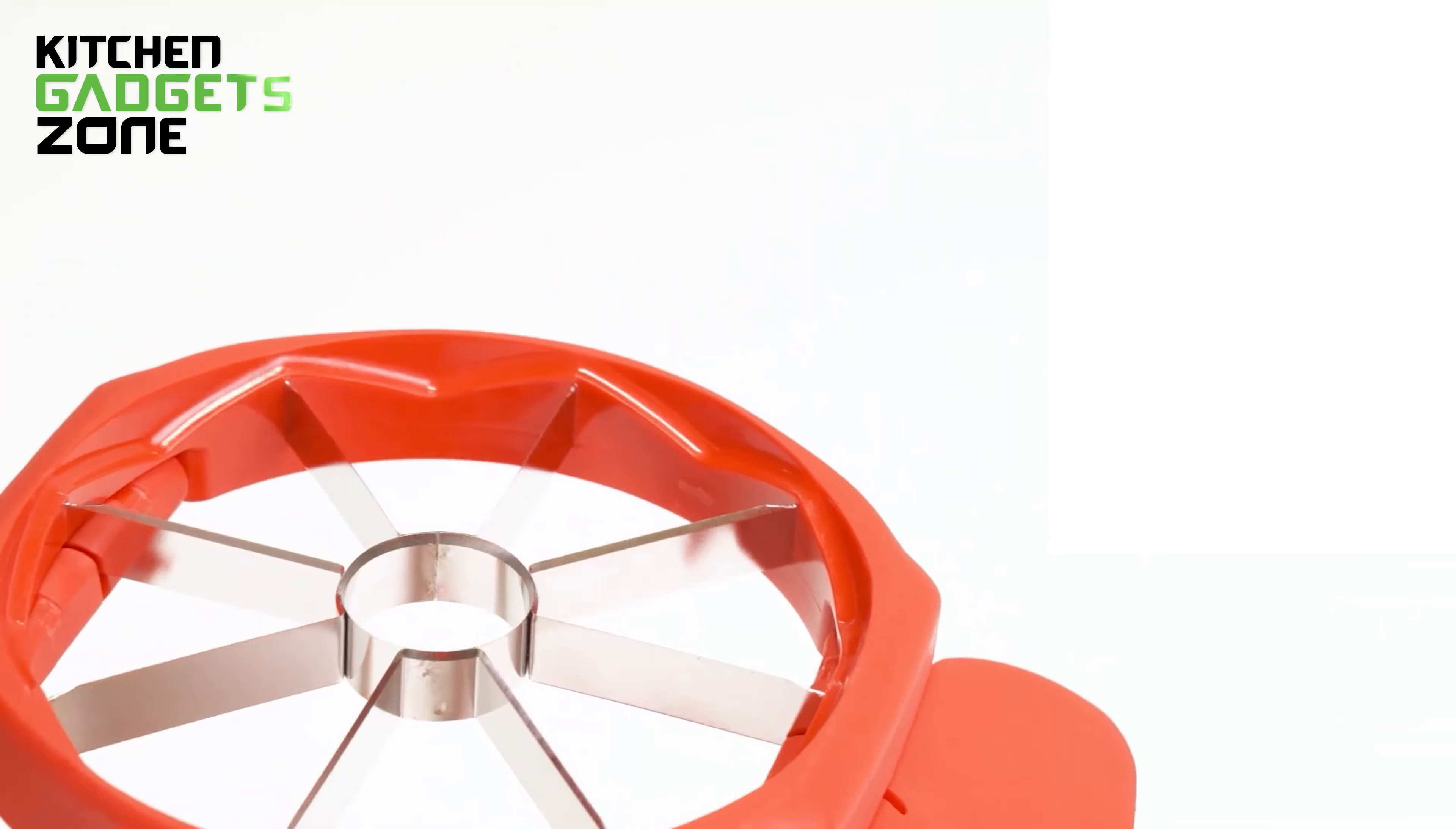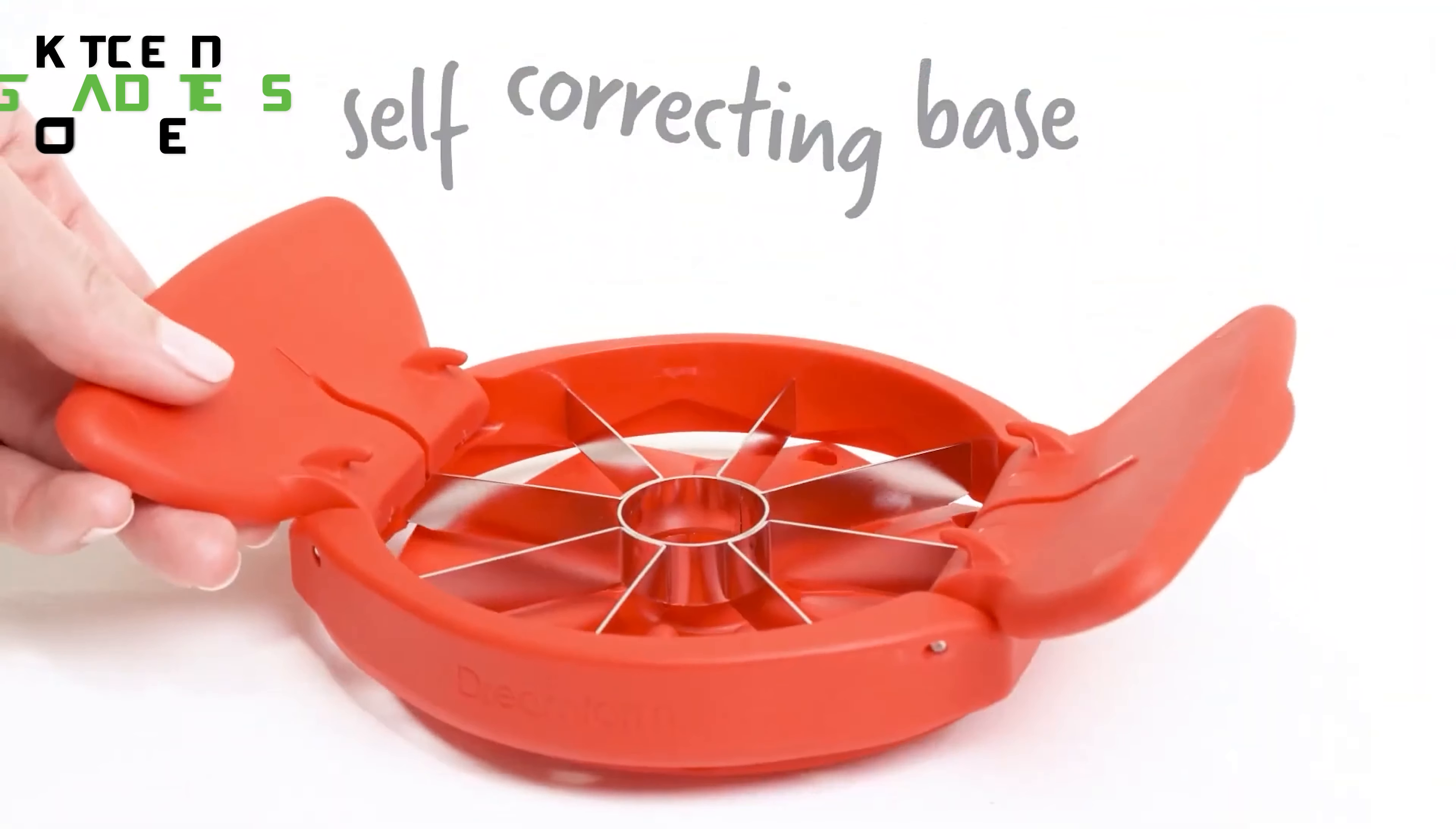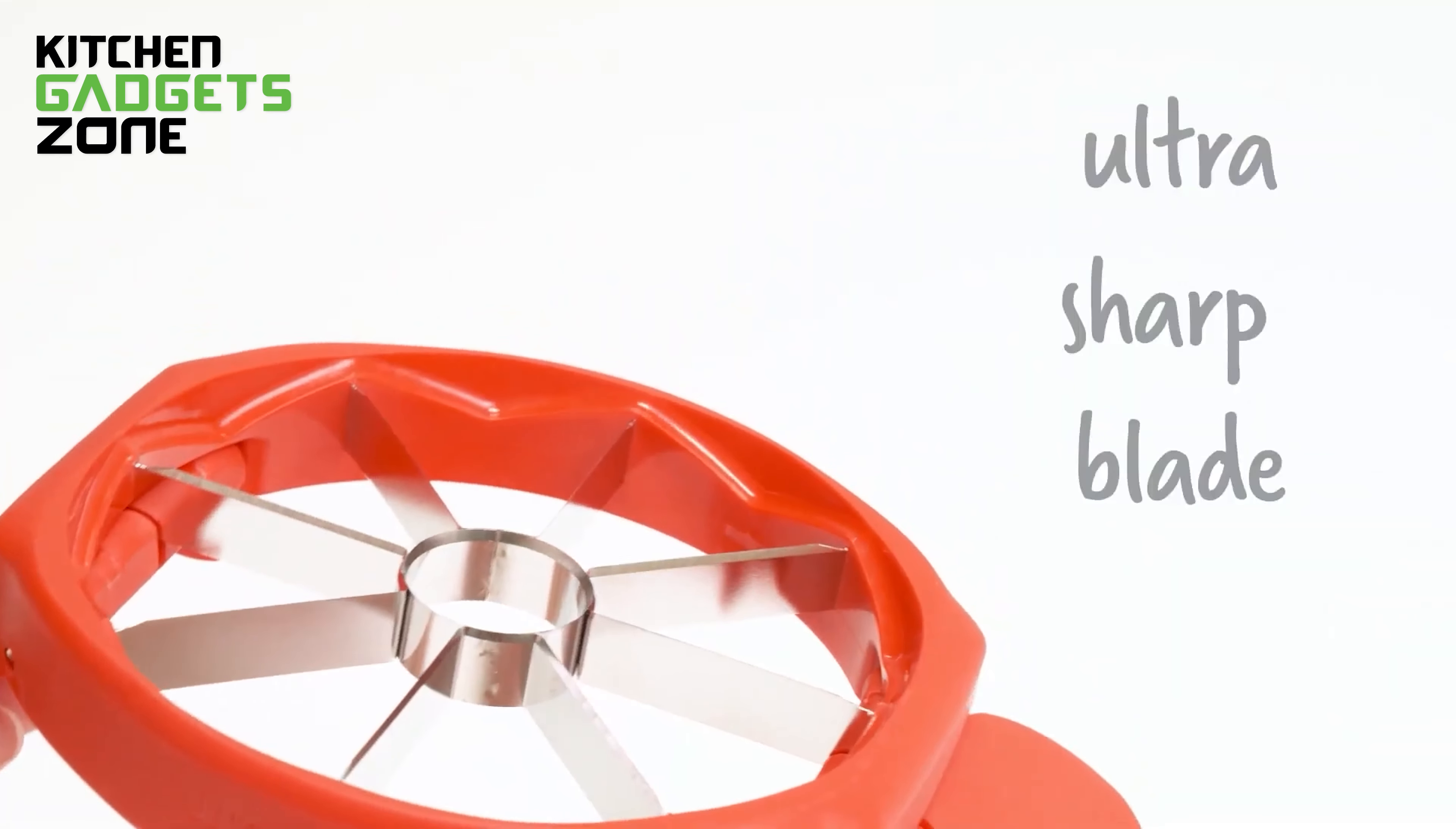The raised handles fold flat for compact, space-saving storage, while the auto-aligning base ensures complete cuts without a cutting board. When it's time to put it away, the base locks together with the folded handles, covering the double-reinforced Japanese stainless steel blade for safe storage.